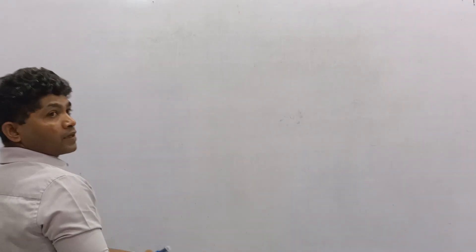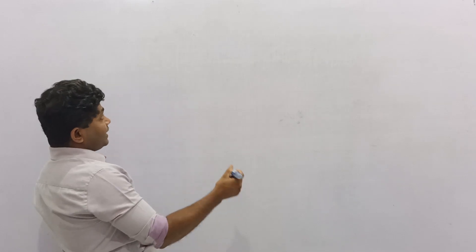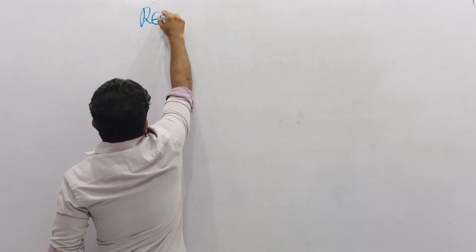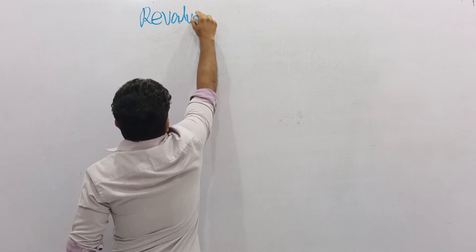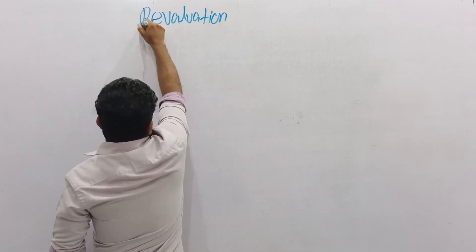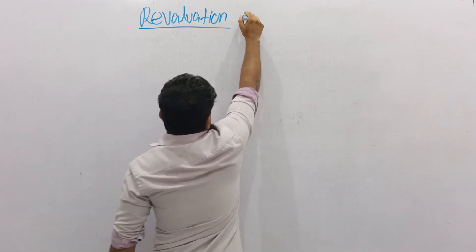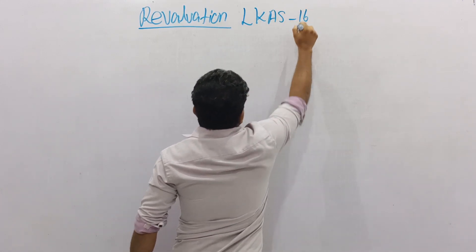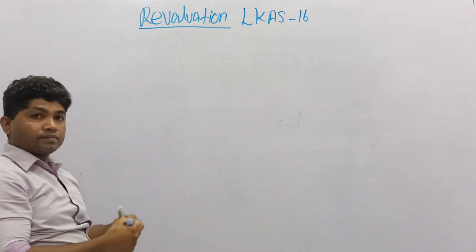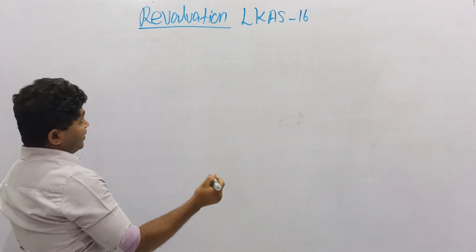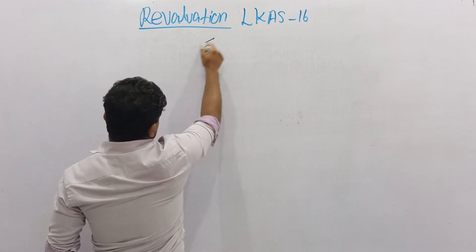Now, I am going to discuss revaluation adjustment. Think revaluation — relevant for IAS16, which covers revaluation of property, plant and equipment. This is a part of IAS16. Revaluation mainly can be divided into two parts.